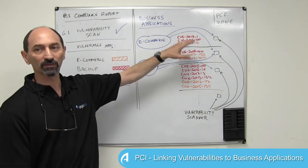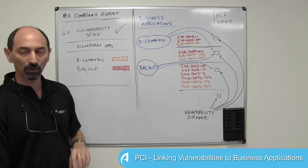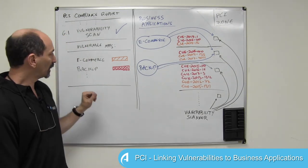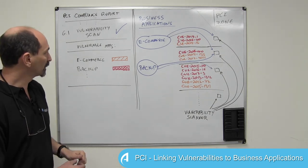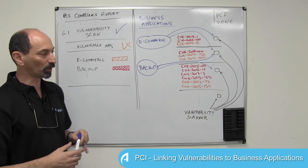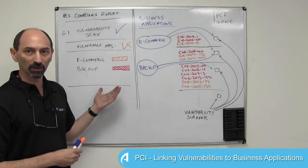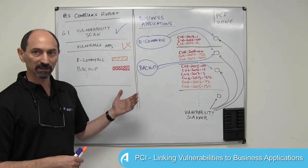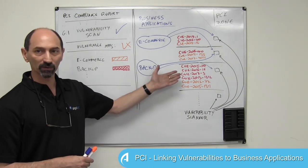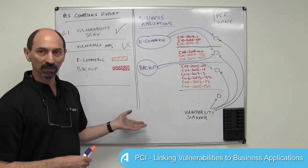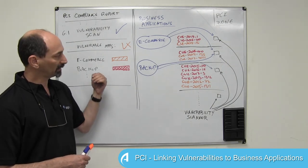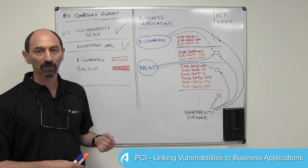For instance, e-commerce relying on those two servers might have an aggregated vulnerability score coded as orange, whereas the backup system relying on its servers has an aggregated score coded as red. This information is highly valuable in the course of a PCI audit. Beyond helping you pass the audit, it moves you a great distance toward prioritizing and fixing these things — because now you know what the business applications relying on vulnerable servers do, which ones are more business critical, and you can balance the severity of findings against the criticality of the application to make a conscious decision about what to patch and when.